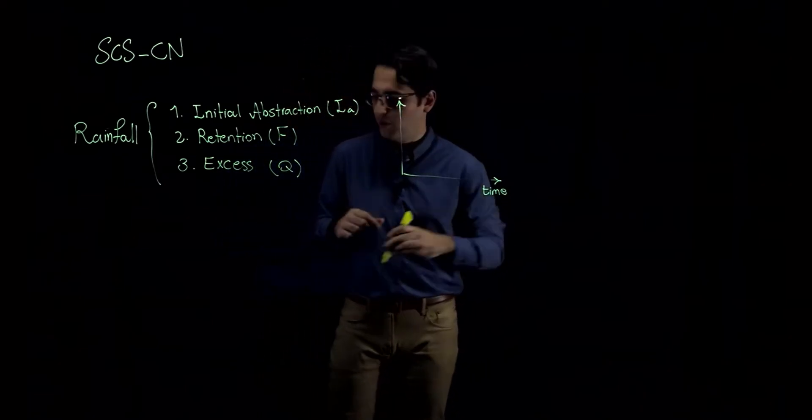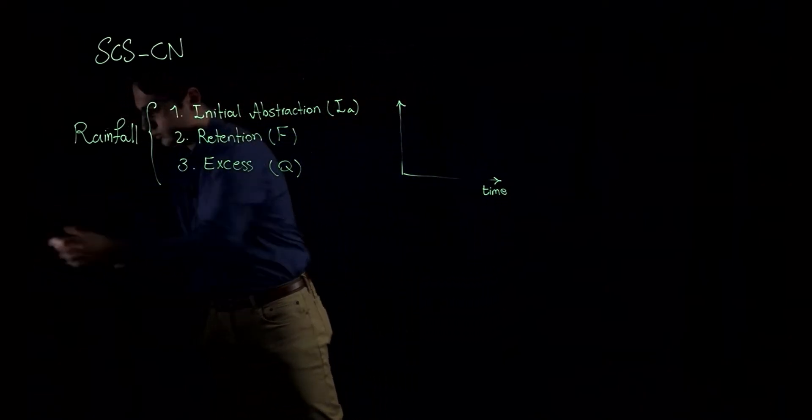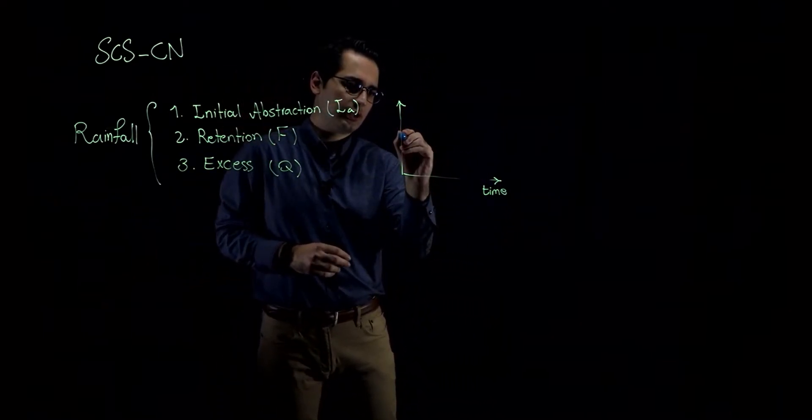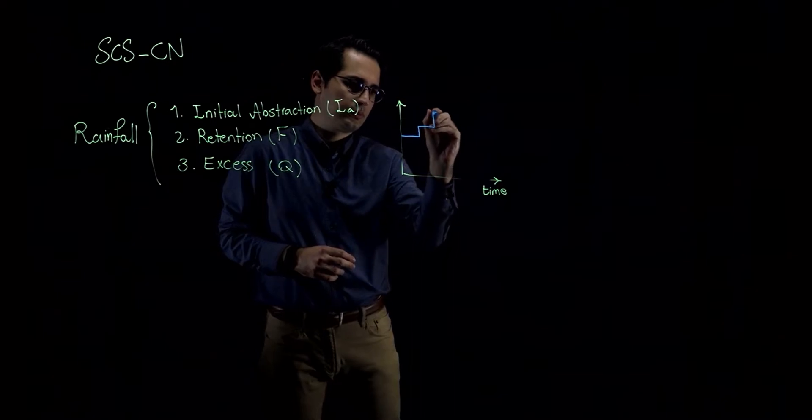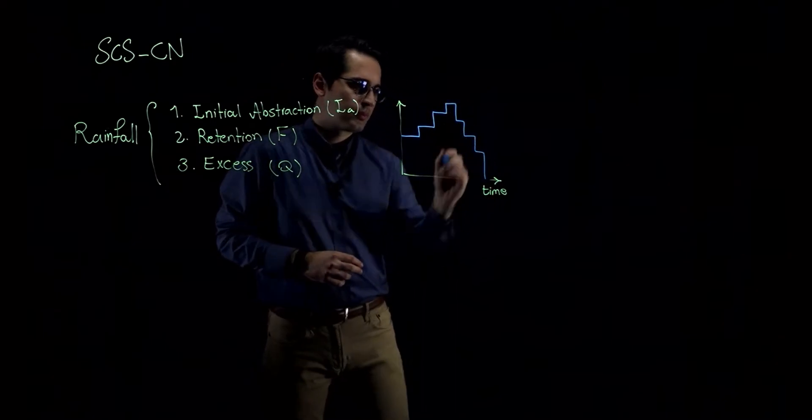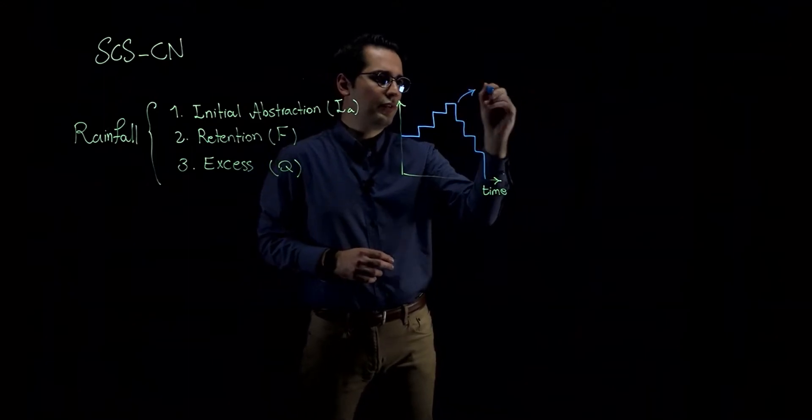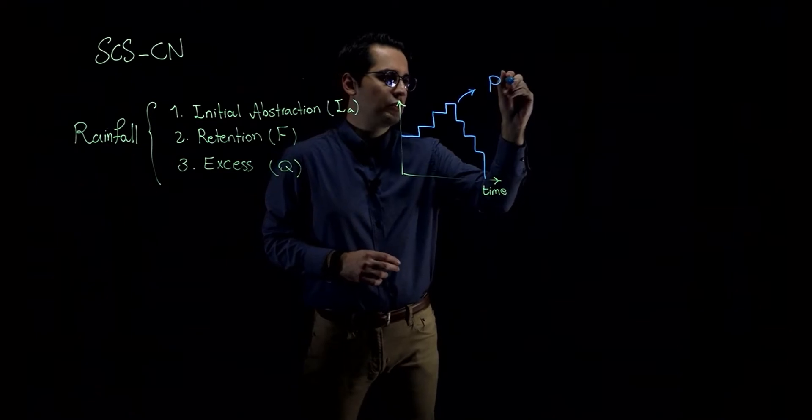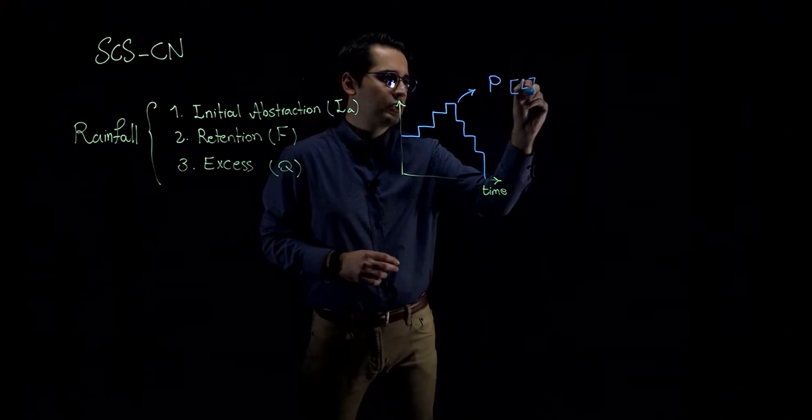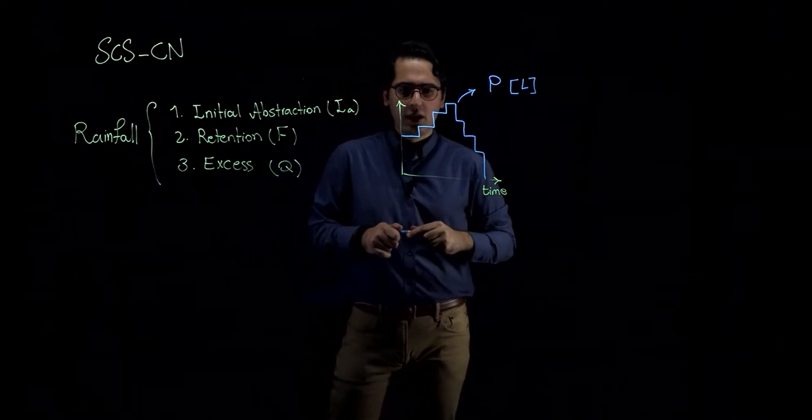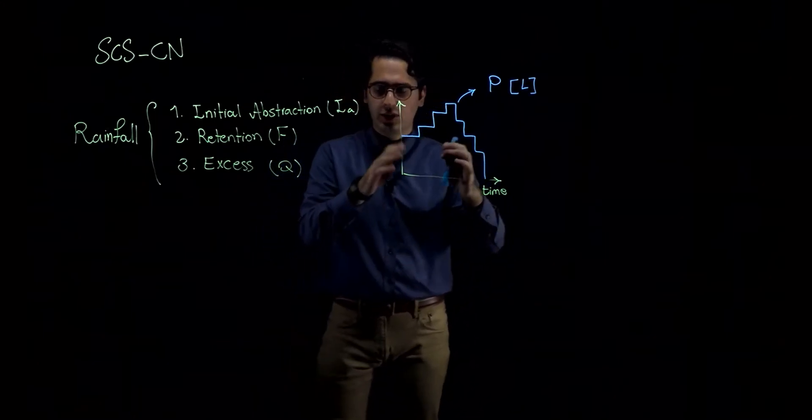And rainfall would be something like this. So this would be my rainfall, I'm going to show it with P, and the unit of this rainfall would be unit of length. It could be in millimeters, or centimeters, or in inches. Now, I'm going to show you initial abstraction on this.